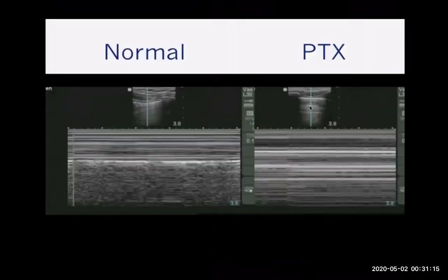We also use M-mode ultrasound. In normal lung tissue, it gives a seashore sign — barcode above (soft tissue) and sandy pattern below (lung) — which is normal. In pneumothorax, you lose all these signs and see only a barcode pattern throughout, confirming pneumothorax. You can also assess the severity of pneumothorax by scanning different parts of the chest.